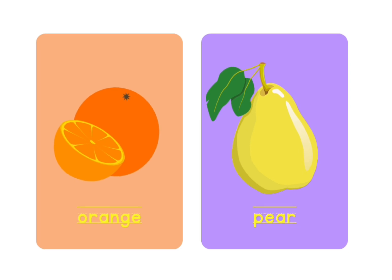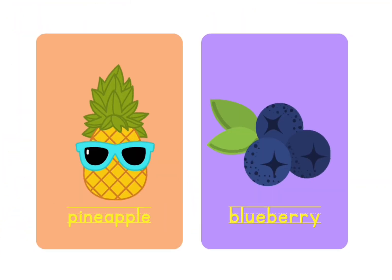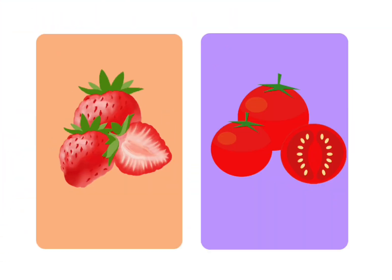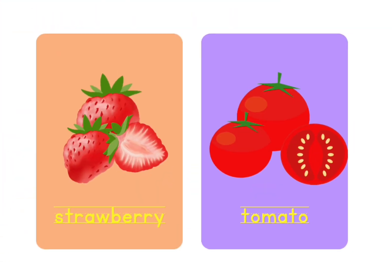O for Orange, P for Pear, B for Pineapple, Blue for Blueberry, S for Strawberry.